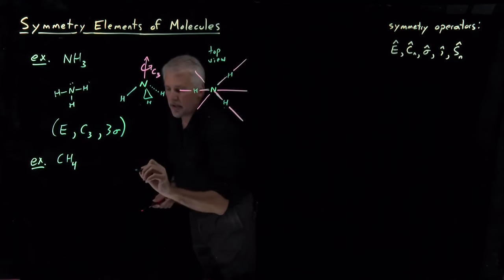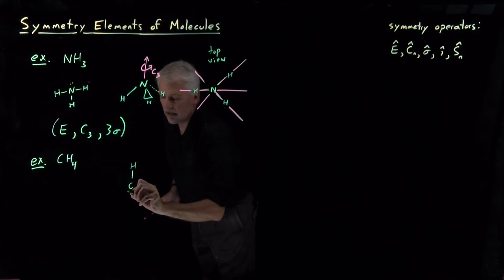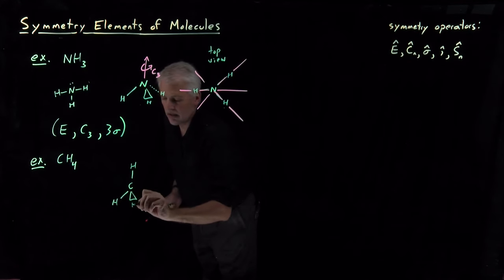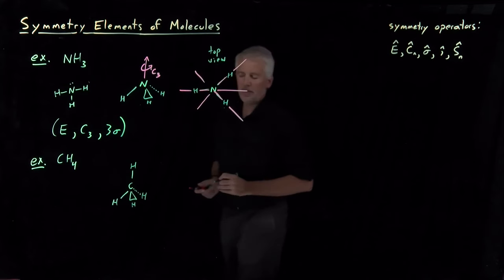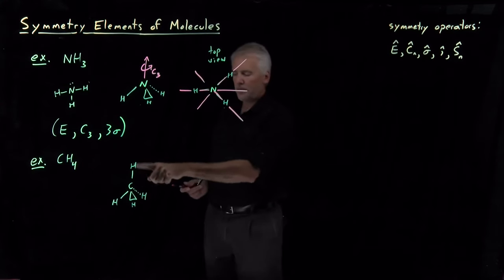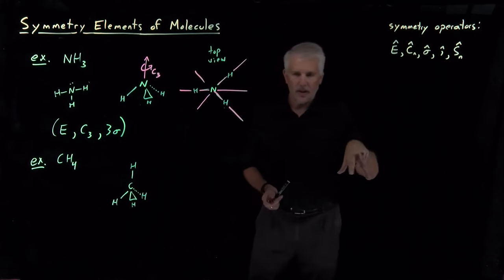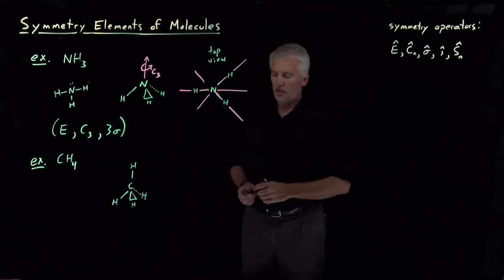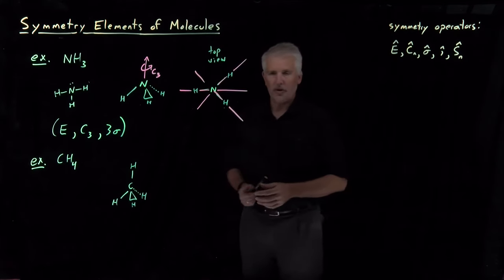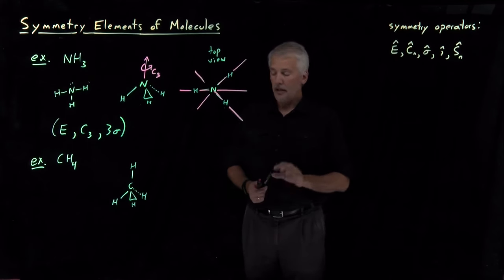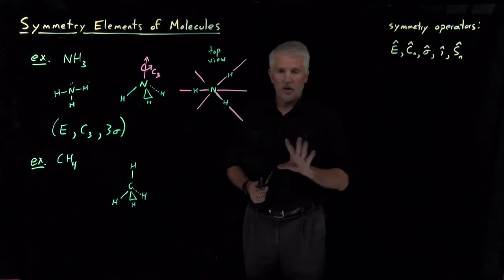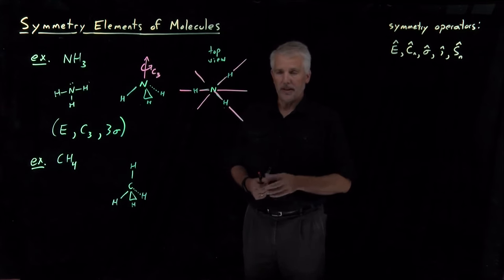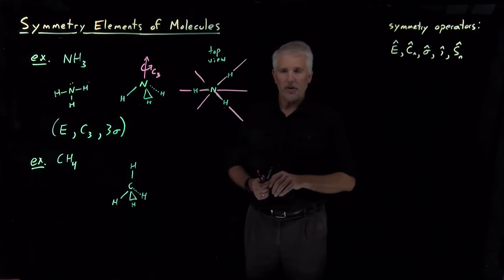The geometry of methane is tetrahedral. One way to draw it is with carbon in the center, one hydrogen pointing straight up from the top of a pyramid, and three hydrogens pointing down forming the legs of a three-sided pyramid. It's going to be useful to also draw the molecule in a different orientation. If you have a model kit from organic chemistry, go ahead and pause this video, dig it out, and build yourself a methane molecule. As you work through symmetry problems, build every molecule you're trying to analyze — it's very handy.